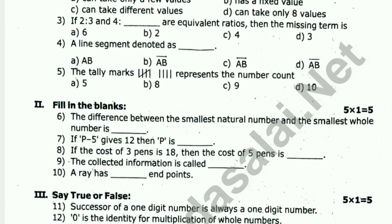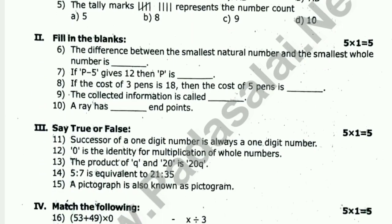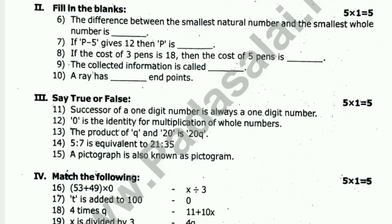Next, fill in the blanks — 5 questions for 5 marks. The difference between the smallest natural number and the smallest whole number is — ? If the cost of 3 pens is 18, then the cost of 5 pens is — ?